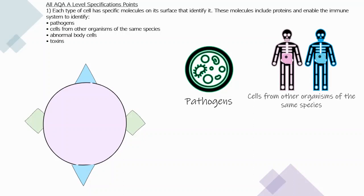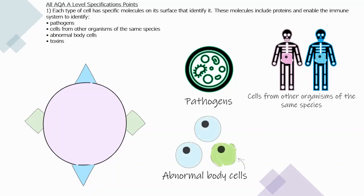Antigens enable the immune system to identify pathogens and also cells from other organisms of the same species. For example, if you kiss your partner and cells from their mouth enter yours, the body identifies them as cells of the same species. The immune system also identifies abnormal body cells — for example, cells that have been damaged by a virus — and knows they need to be destroyed. It can also help identify toxins.